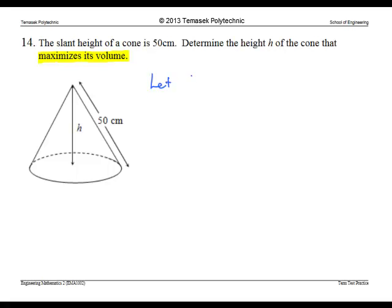Suppose v is the volume of the cone. Then by formula, we know that if I let the base radius be r, then the volume is equal to 1 over 3 pi r squared h.